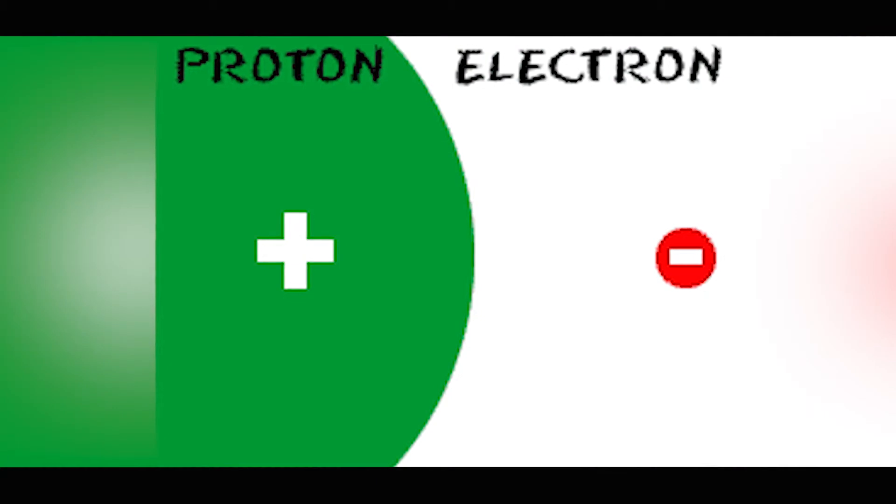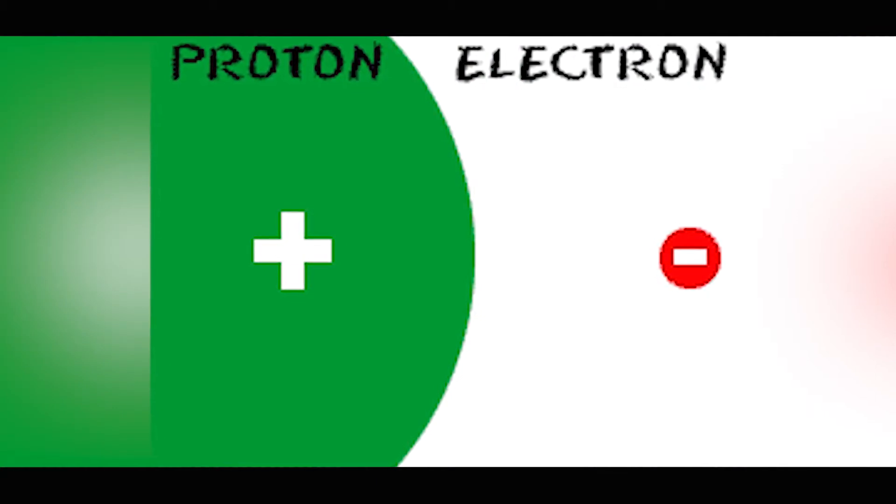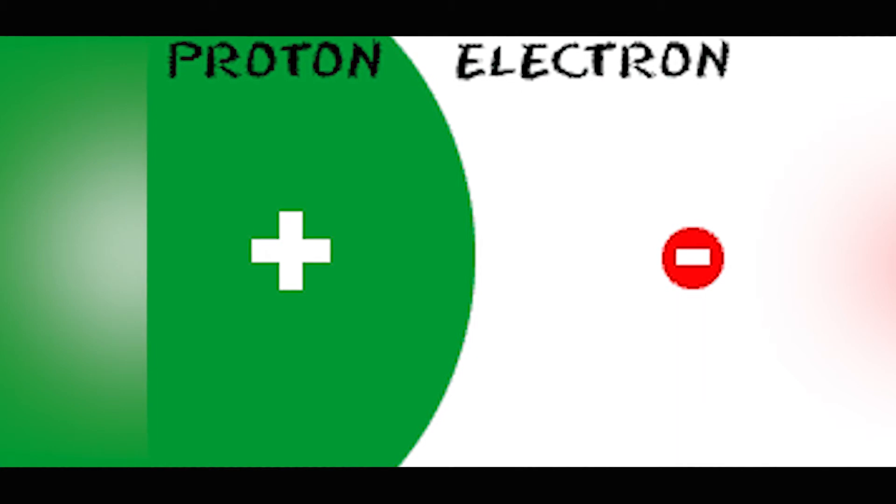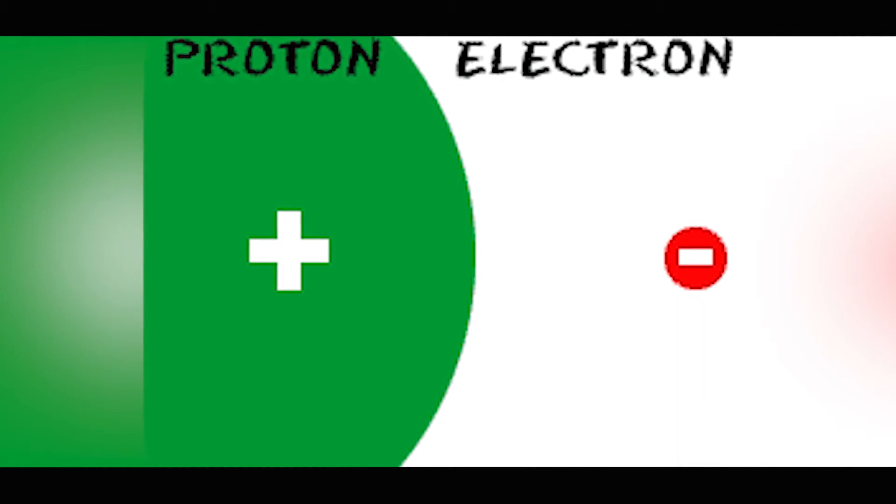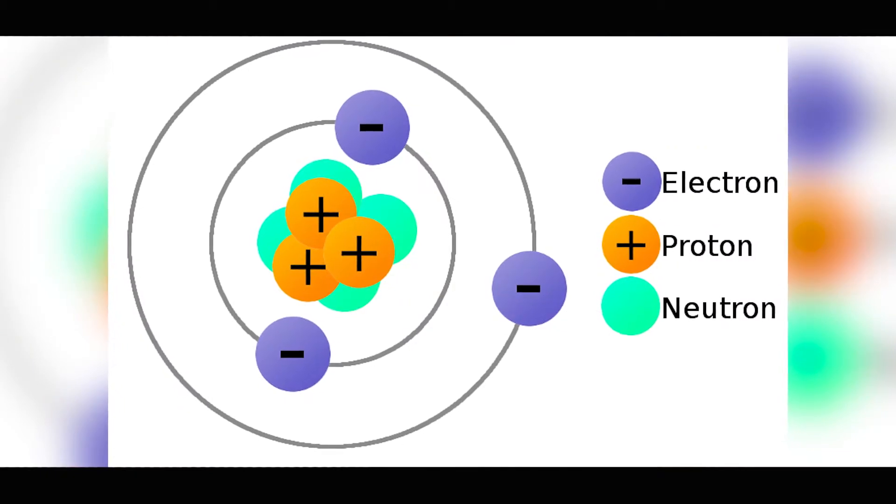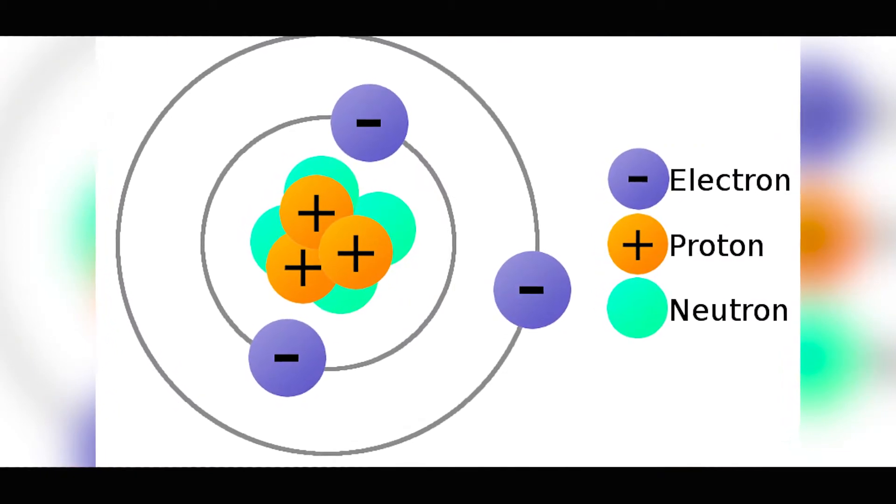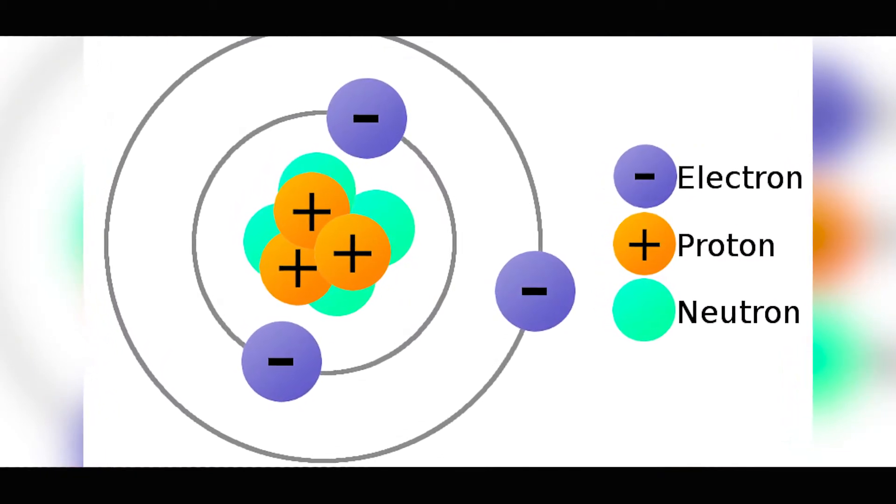Protons are the positively charged particles and the elements are defined by how many of these positive particles they have. Science tells us that opposites attract, especially in chemistry. So all of these positive subatomic particles are attracted to negative subatomic particles called electrons which have a negative electrical charge. Usually for a stable element, not in any compound or mixture, will have the same amount of electrons as it does protons because things seek to even out.